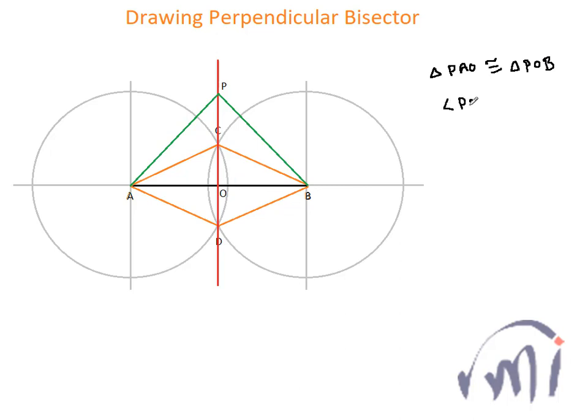Because angle POB is equal to angle POA which is 90 degrees. OP is equal to OP, the common line. And AO is equal to OP because this line OP is a perpendicular bisector.